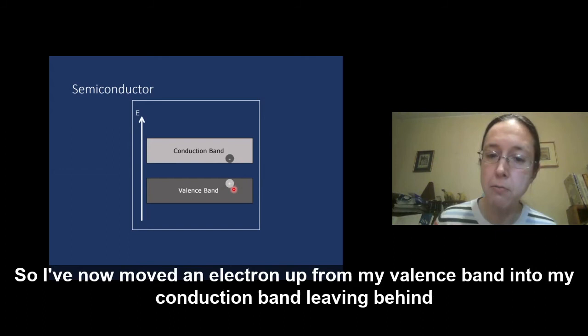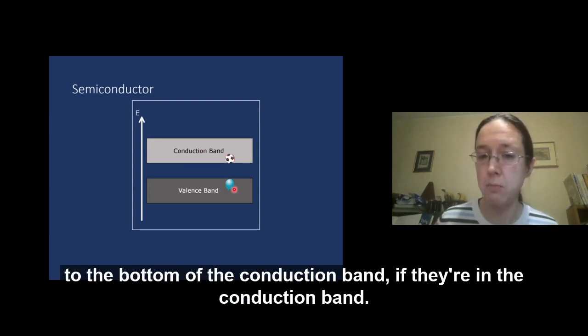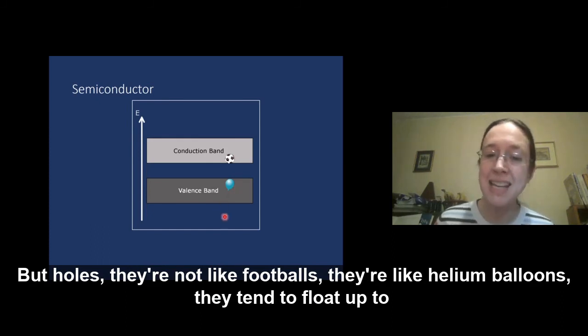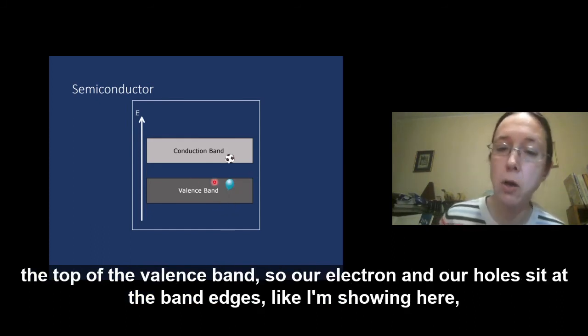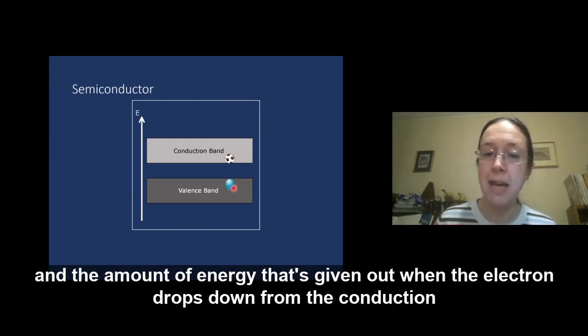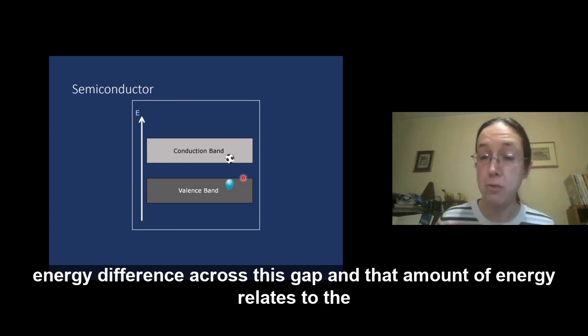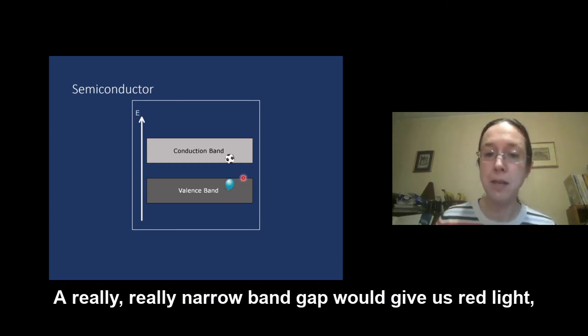So I've now moved an electron up from my valence band into my conduction band, leaving behind a positive hole. What we find is that electrons are like footballs. So footballs roll downhill. And electrons tend to always find their way to the bottom of the conduction band if they're in the conduction band. But holes, they're not like footballs. They're like helium balloons. They tend to float up to the top of the valence band. So our electron and our hole sit at the band edges, like I'm showing here. And the amount of energy that's given out when the electron drops down from the conduction band into the valence band to combine with the hole is given by the energy difference across this gap. And that amount of energy relates to the colour of light we get out. A really, really narrow band gap would give us red light, a bit wider would give green, quite wide would give blue, very wide would give us something out in the ultraviolet.